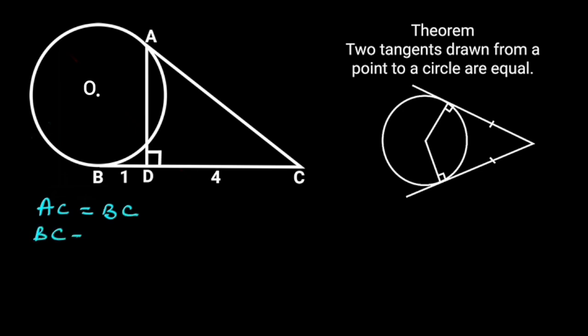Since BC is equal to 4 plus 1, which is 5, AC is equal to 5.